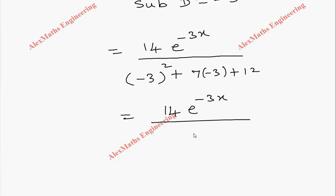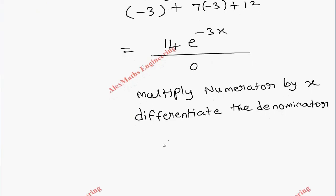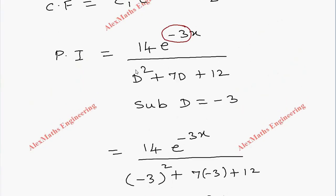Now we multiply the numerator by x and differentiate the denominator. We get x·14e^(-3x) divided by the differentiation of D² + 7D + 12, which is 2D + 7.